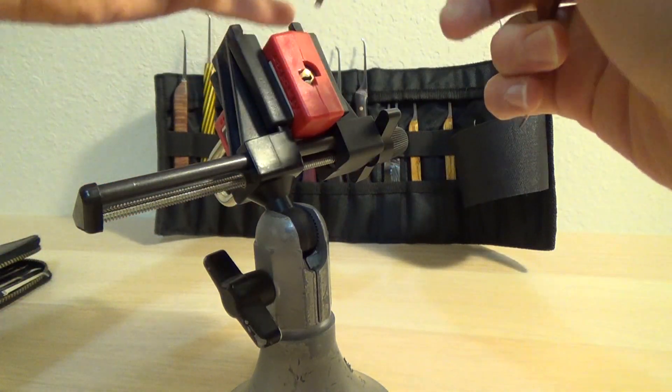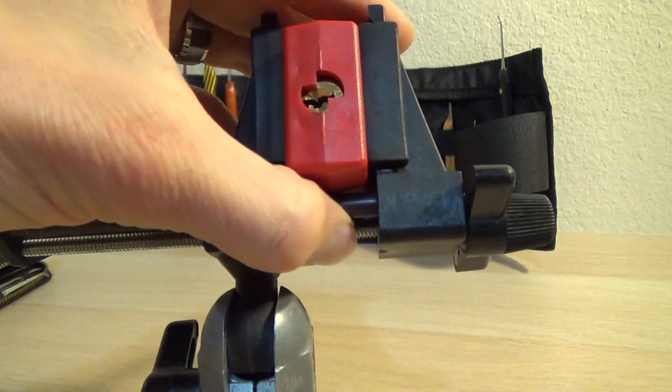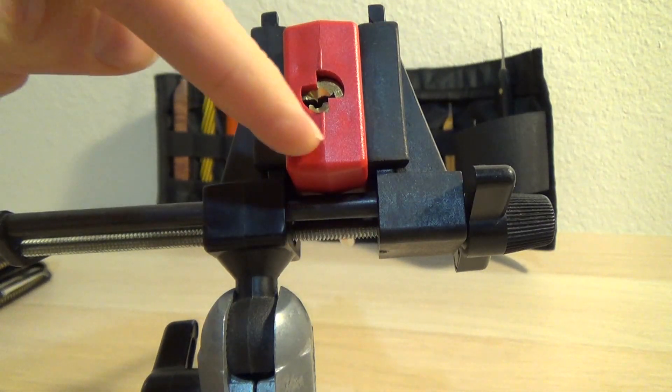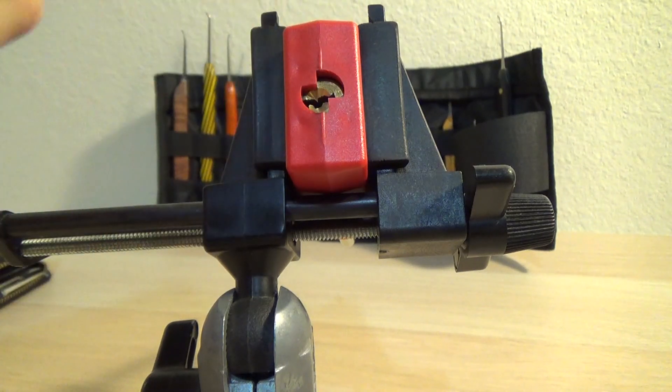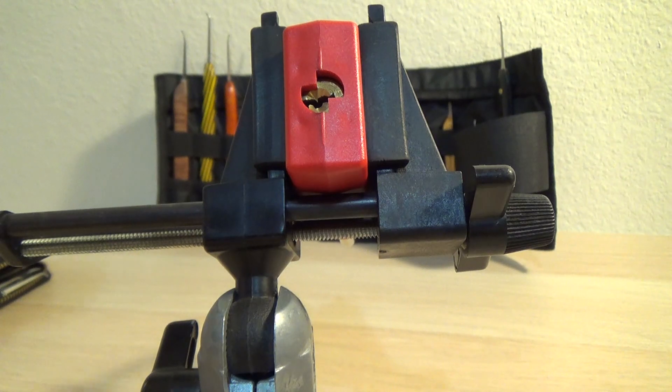Alright, we have it open. Now if you have never opened one of these before, you do not want to rotate the core 180 degrees. Otherwise everything will fall out and this lock is then useless and ruined and basically not good for anything.